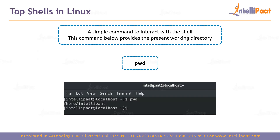Here is an example of interacting with the shell. The command pwd provides the present working directory. When you type pwd and hit Enter, the shell validates the command, then pushes it to the kernel. The kernel executes it with the help of the hardware and gives back the result to the shell, which displays it to you.